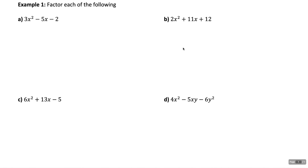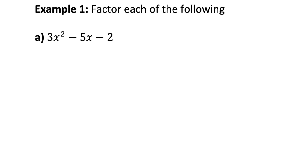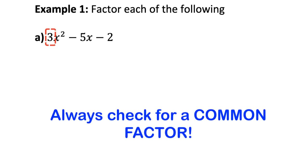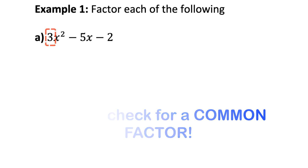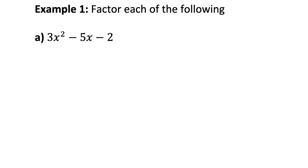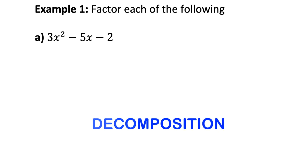Let's go to example one. For part a, we have a quadratic with three terms where the leading coefficient is not one — it's a three. The first thing to do is check for any common factors. Maybe we can common factor out that three, but three doesn't go into five and two, so we're not going to be able to common factor out that coefficient of three. That means we'll have to factor this by the method of decomposition.